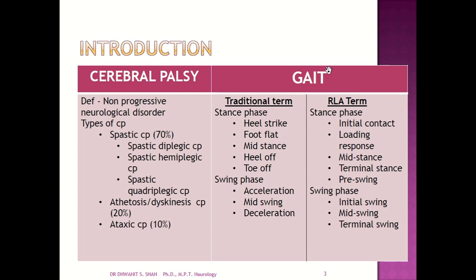These are the normal patterns of gait. We know the traditional gait terminology includes stance phase, double support, and swing phase. As per the Rancho Los Amigos (RLA) terms, the major terminology is stance phase and swing phase. In the traditional terminology, the stance phase includes heel strike, foot flat, mid-stance, heel-off, and toe-off. The swing phase includes acceleration, mid-swing, and deceleration.